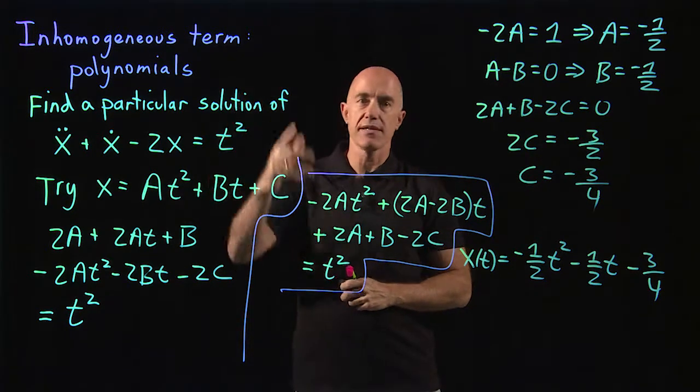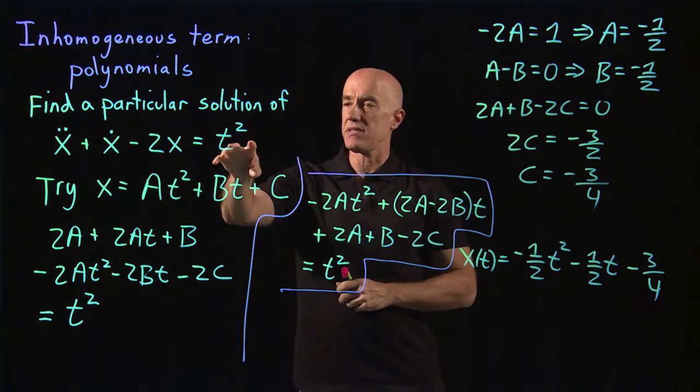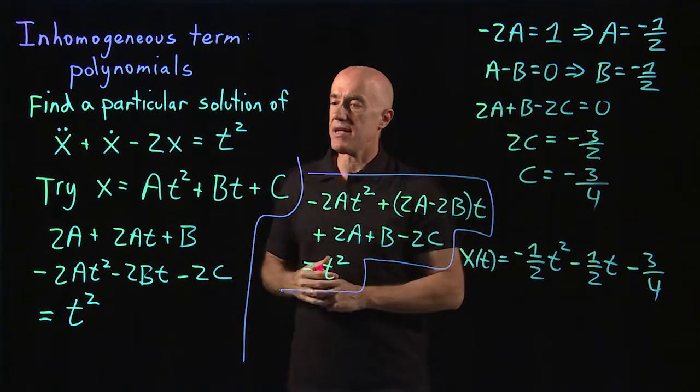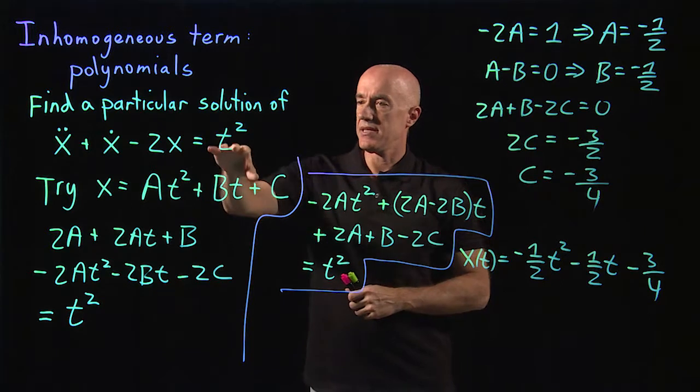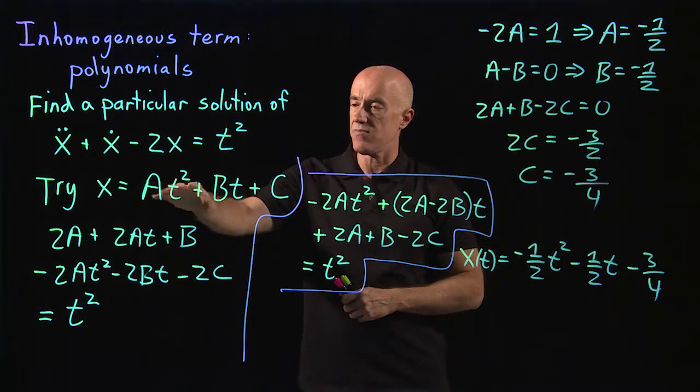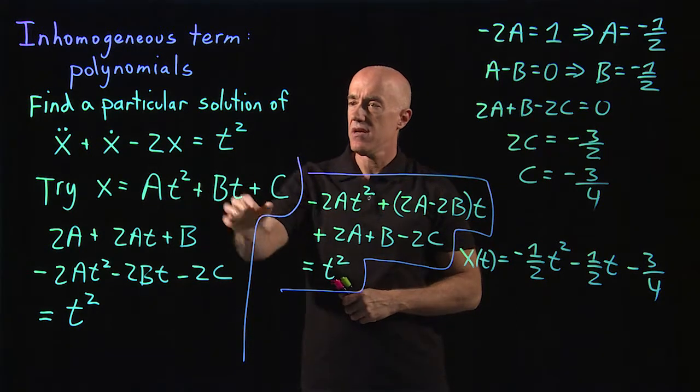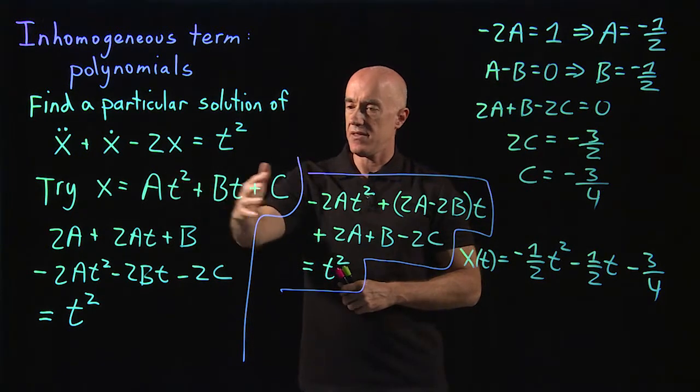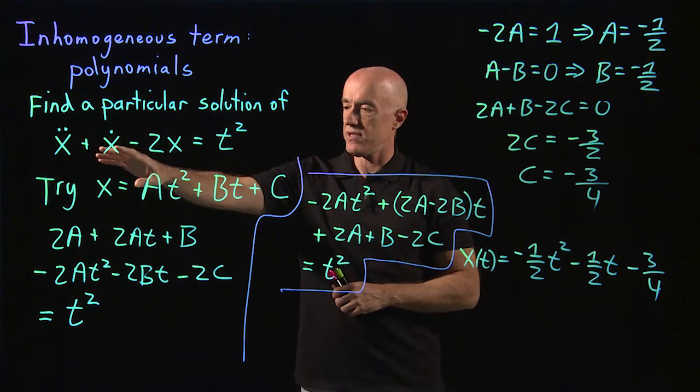So let me review what we did here. We're trying to find a particular solution when the right-hand side is a polynomial in t. The ansatz we need to use is the same order of the polynomial on the right-hand side with free coefficients. But we need to have all of the lower order powers of t in the ansatz because of the derivatives.